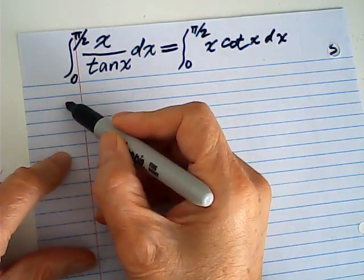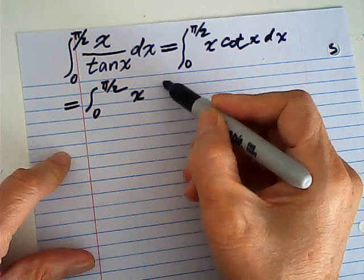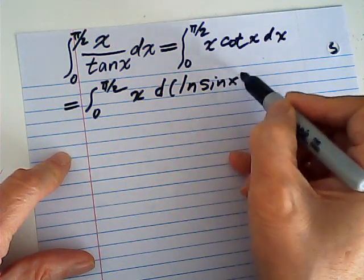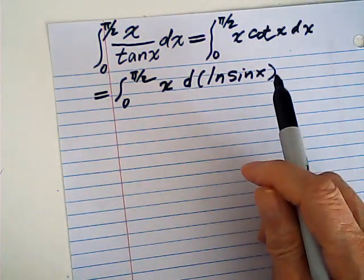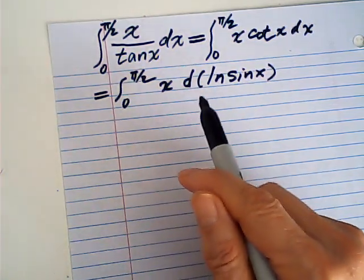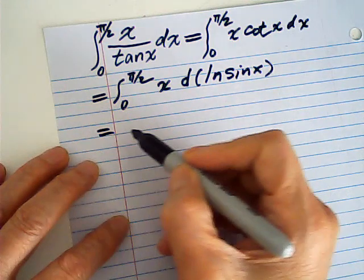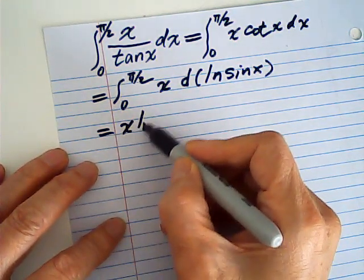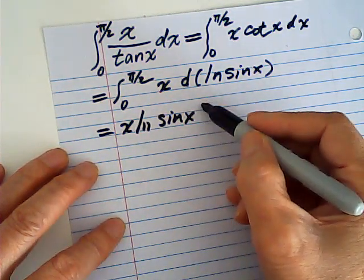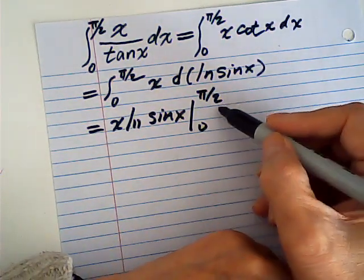This is equal to the integral from 0 to π/2 of x times the derivative of log(sin x), since the derivative of log(sin x) equals cotangent(x) dx. Now it's ready for integration by parts. This is my u and this is my dv. u dv equals u times v — x times log(sin x) from 0 to π/2 — minus the integral of v du.